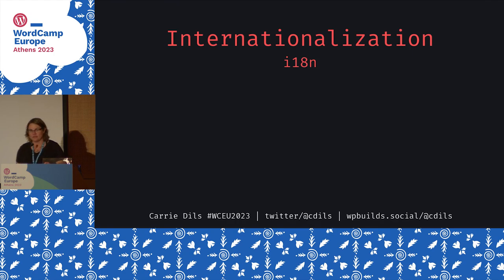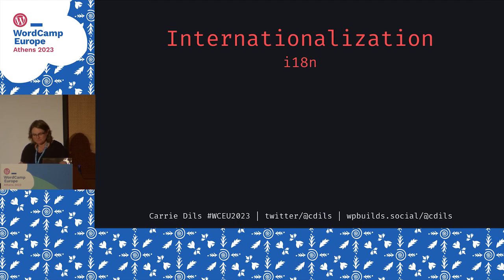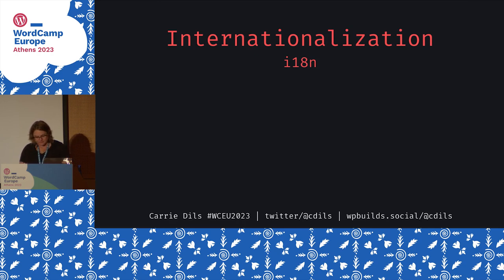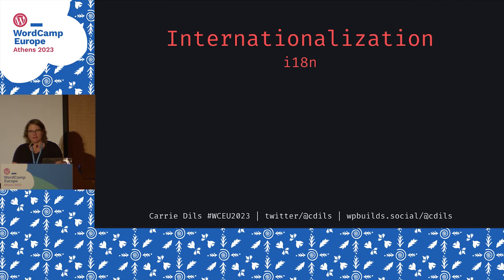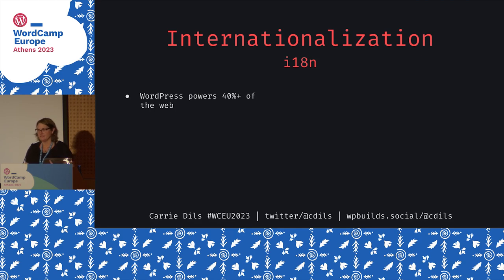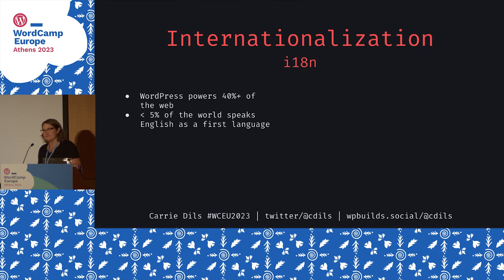Internationalization, sometimes abbreviated I18N — 18 being the number of letters between the I and the N — is what makes WordPress accessible for users who don't speak English. Some fun facts: WordPress currently powers over 40% of the web, about 43% at last count. The sources for this data are linked in the slides.